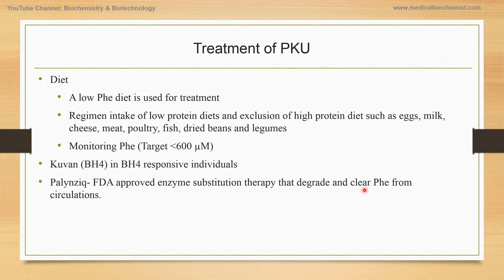There are three different treatments for PKU. Diet is the traditional method, where individuals are given a low phenylalanine diet excluding high-protein foods such as eggs, milk, cheese, and meat. Patients are monitored to maintain a target phenylalanine level of 600 micromoles. The other two treatments include KUVAN, which is tetrahydrobiopterin, and Palynziq for PKU.